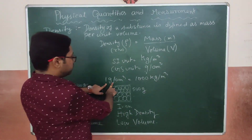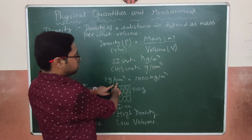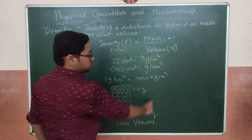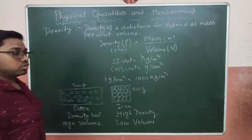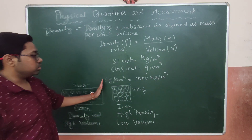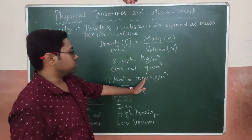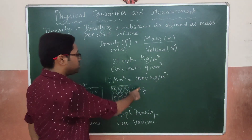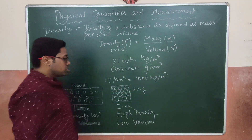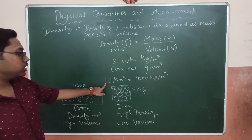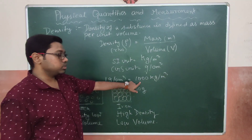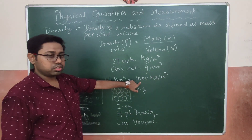1 gram per centimeter cube is equal to 1000 kg per meter cube. So if we want to convert from CGS unit to SI unit, we multiply by 1000. For example, 2 gram per centimeter cube equals 2000 kg per meter cube.